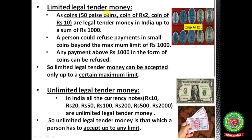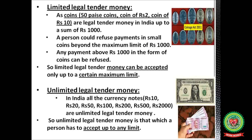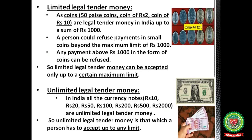Limited legal tender money refers to coins — like 50 paisa, 2 rupees, and 10 rupee coins — which are legal tender in India only up to a sum of rupees 1000. If any person has to make a payment more than rupees 1000, the acceptor can deny it in the form of coins, because it is very difficult to count small coins for a big amount. So limited legal tender money can be accepted only up to a certain maximum limit.